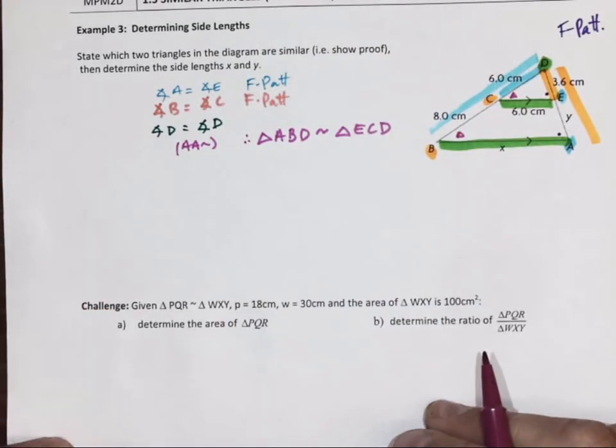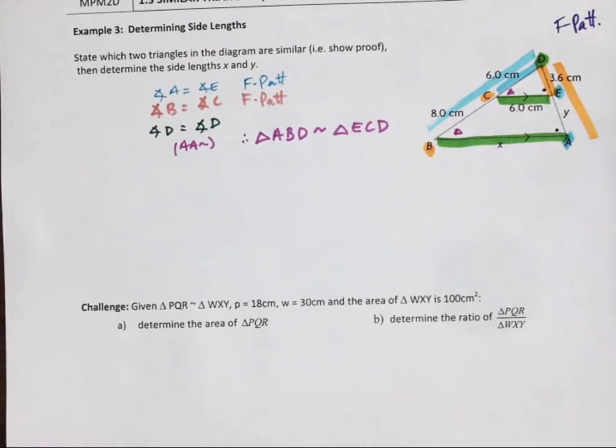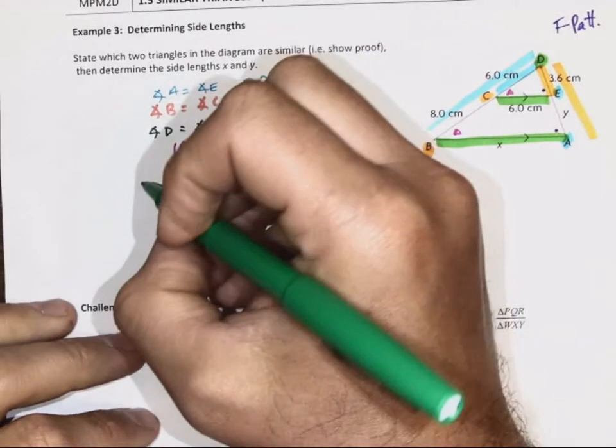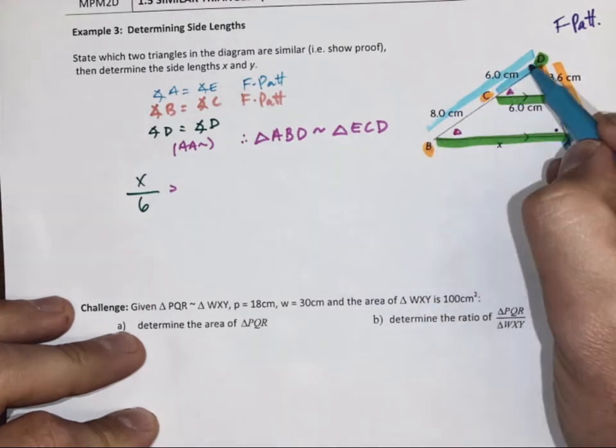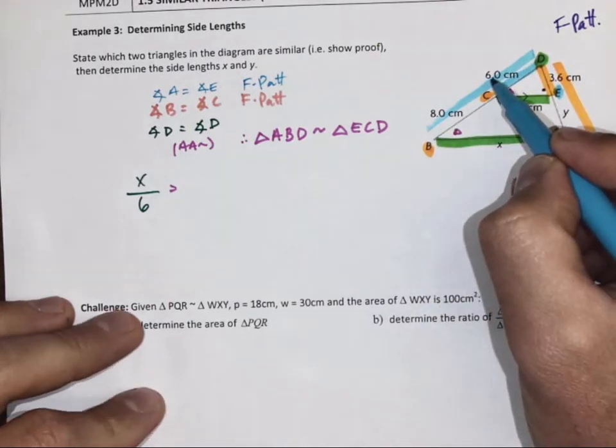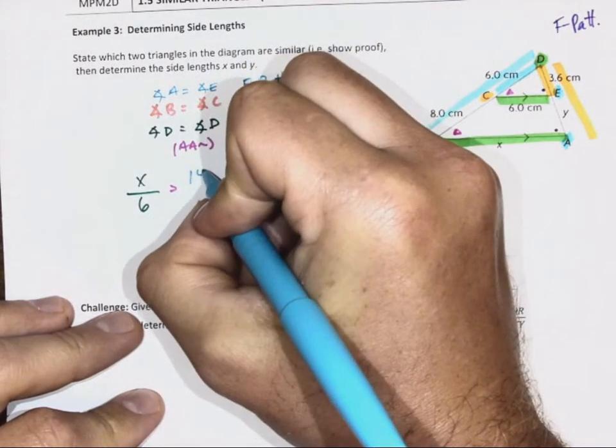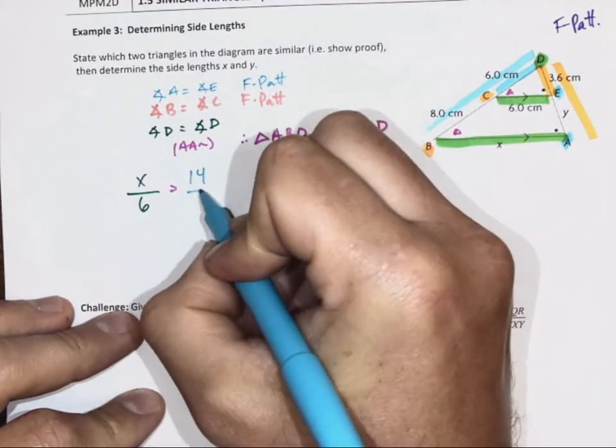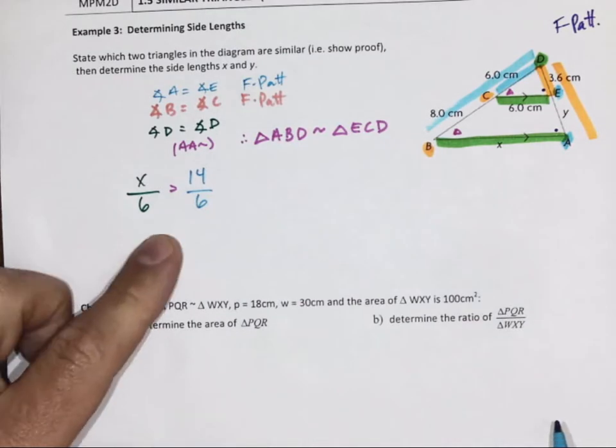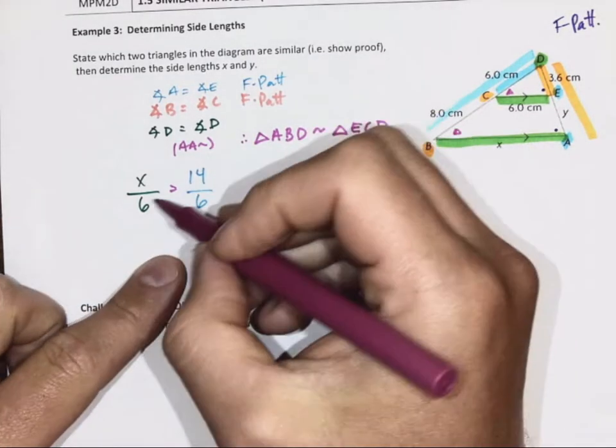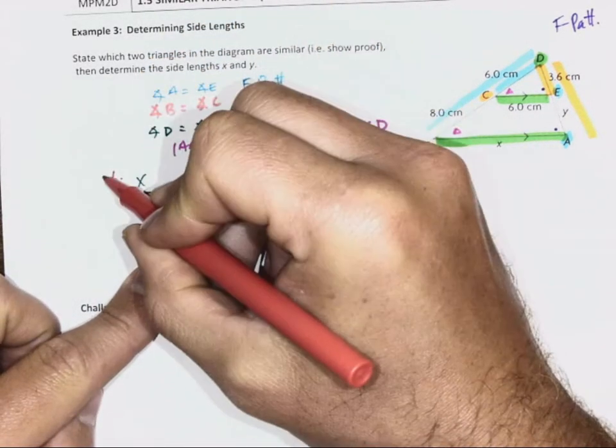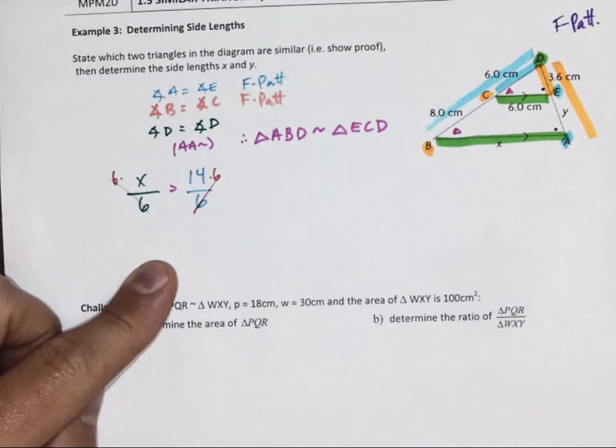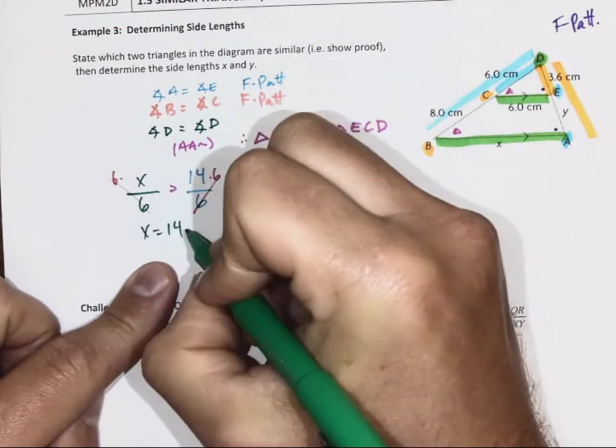So let's start matching up what we know. We got green matches up with green. And blue match up with blue. So big triangles gonna be the whole thing: 8 plus 6, which is 14, over 6. That's pretty handy, I could do that right now. Times 6. So X is 14 in my unit, centimeters.